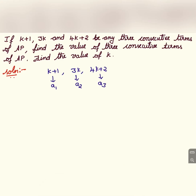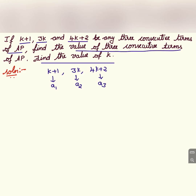Namaste everybody, welcome to my channel. If k plus 1, 3k, and 4k plus 2 are any 3 consecutive terms of an AP, find the value of k and the 3 consecutive terms. We have to find out all these 3 terms and the value of k.